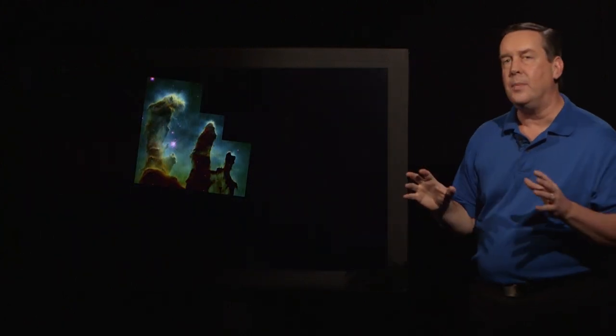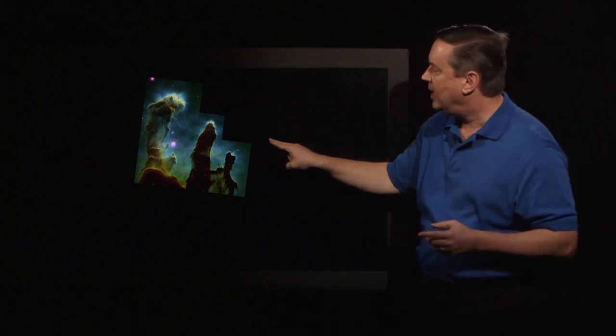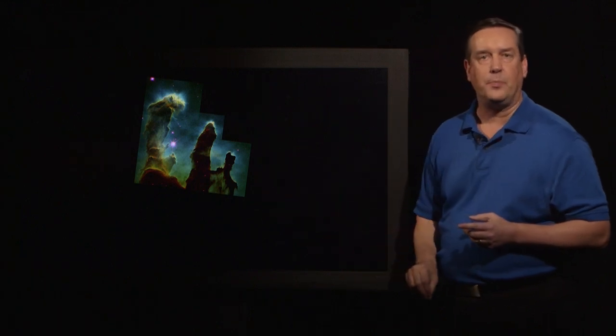So this Hubble image is from 20 years ago, and it was taken with an instrument called the Wide Field Planetary Camera 2. You can tell because it has this characteristic stair-step shape.